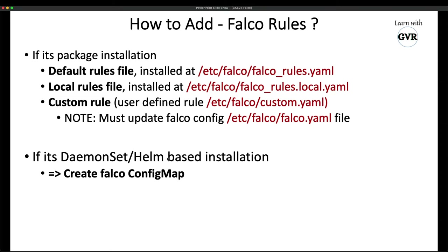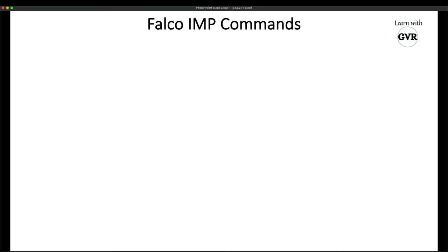If you install via DaemonSet, all rules are stored as ConfigMaps. To add a new custom rule, create a ConfigMap and apply it using 'kubectl create configmap' or 'kubectl apply -f'.